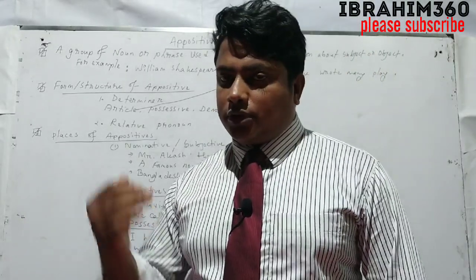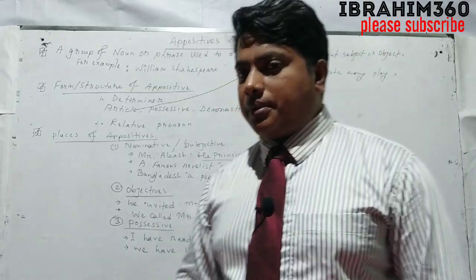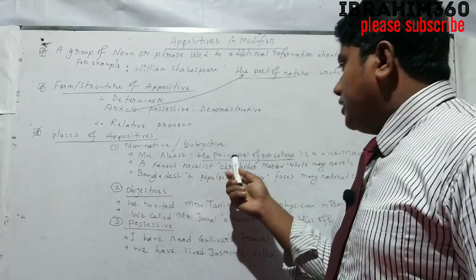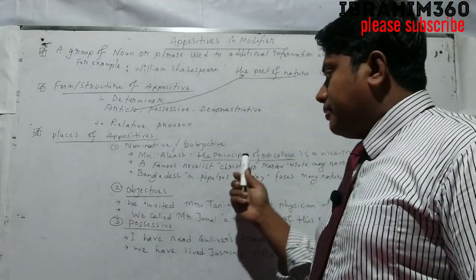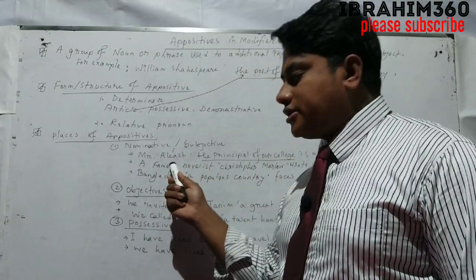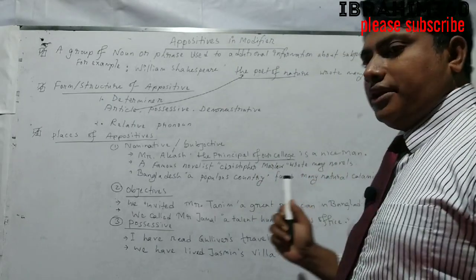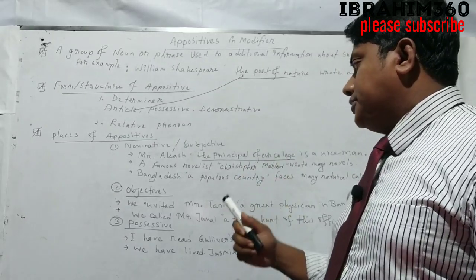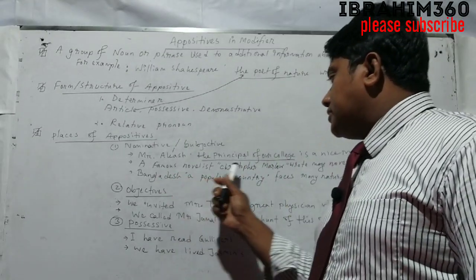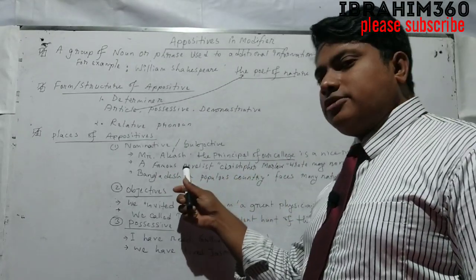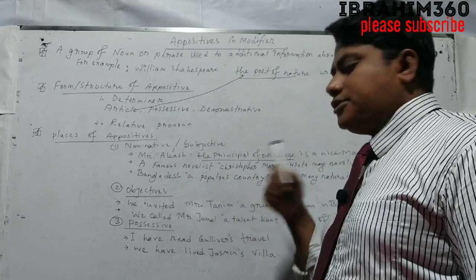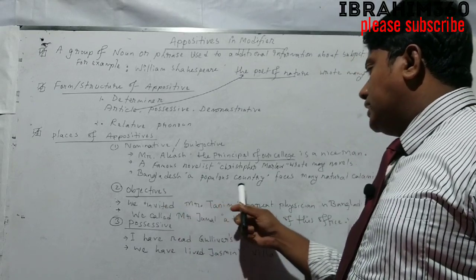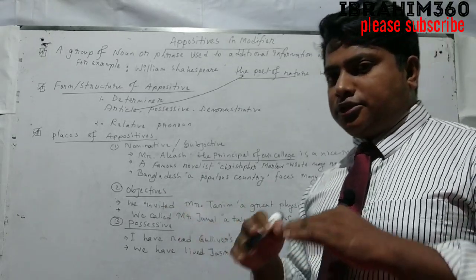For example, Mr. Akash is the subject. 'The principal of our college' gives additional information about Mr. Akash — that is the appositive. Another example: Christopher Marlowe, a famous novelist — 'a famous novelist' gives additional information about Christopher Marlowe, so it is the appositive. He wrote many novels.